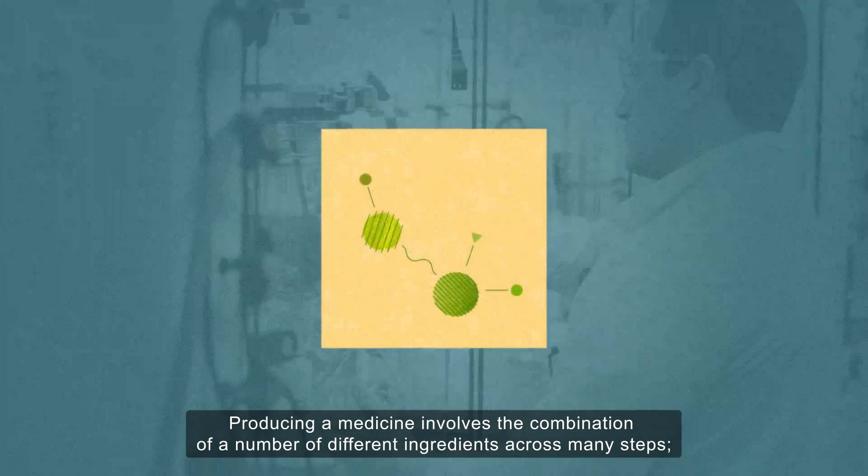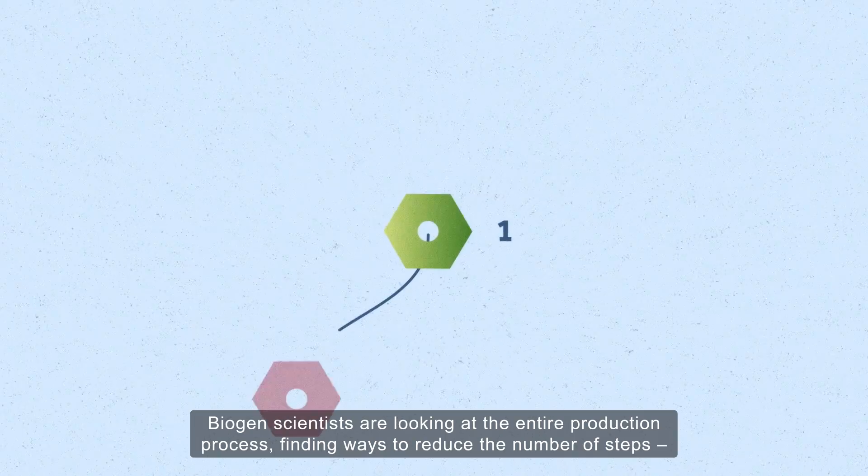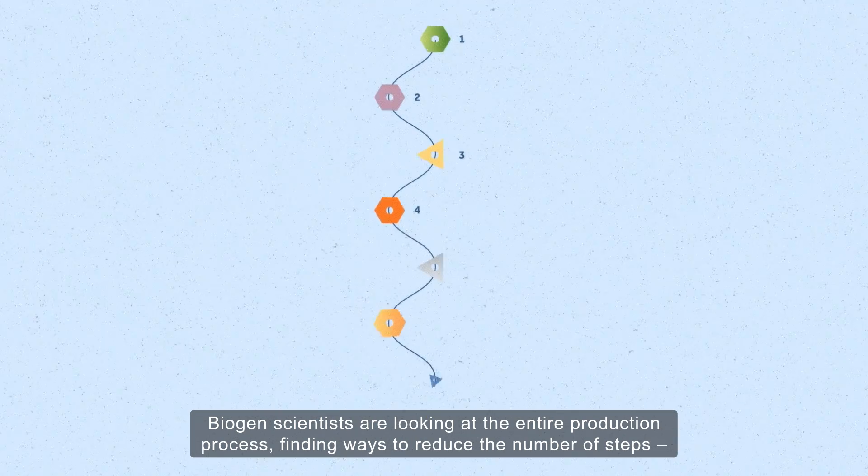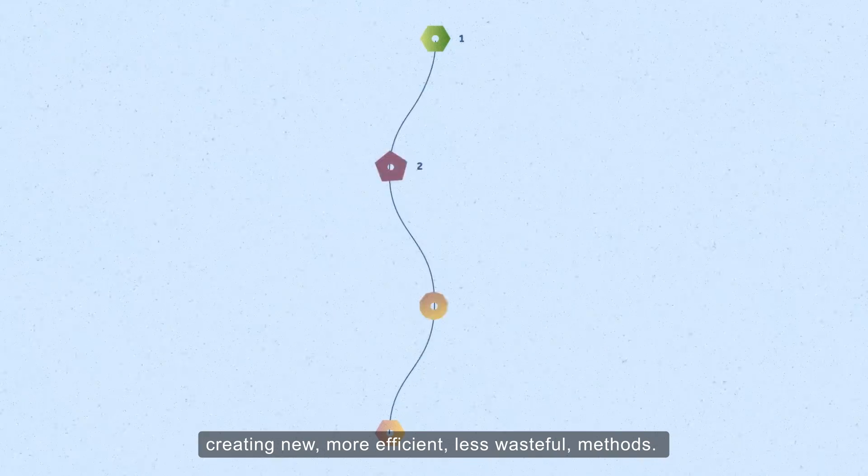Producing a medicine involves the combination of a number of different ingredients across many steps. Biogen scientists are looking at the entire production process, finding ways to reduce the number of steps, creating new, more efficient, less wasteful methods.